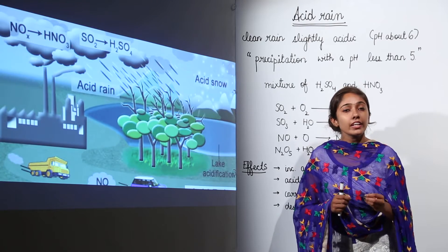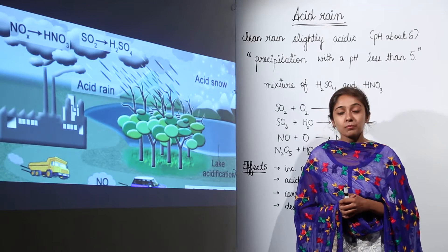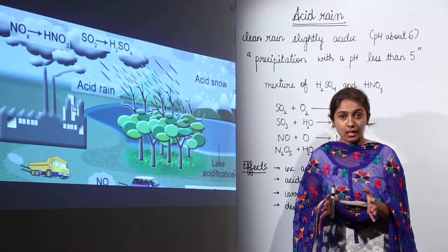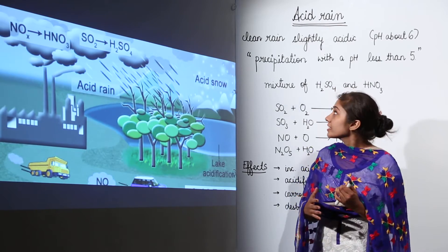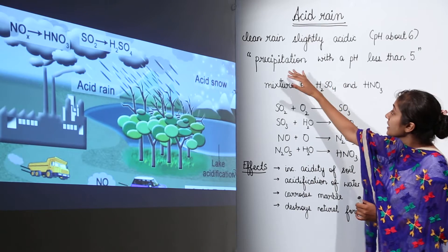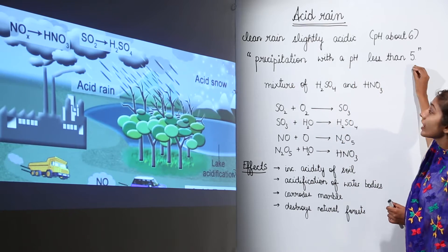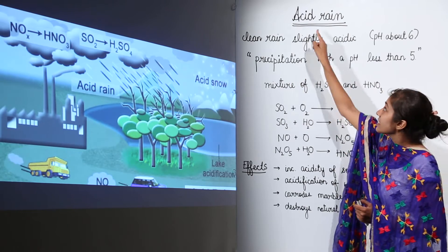Normally clean rain is slightly acidic with a pH of about 6 because of the presence of carbon dioxide in the atmosphere, but precipitation with a pH less than 5 is known as acid rain.